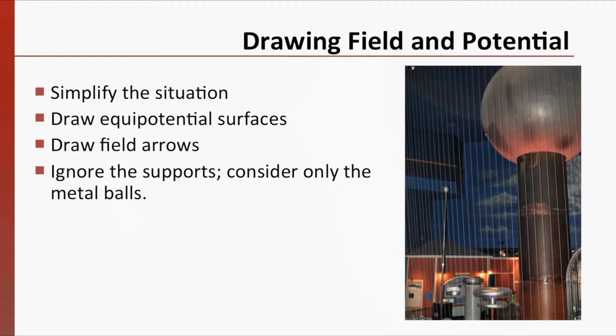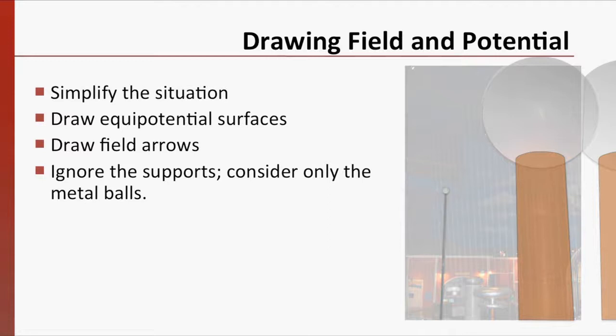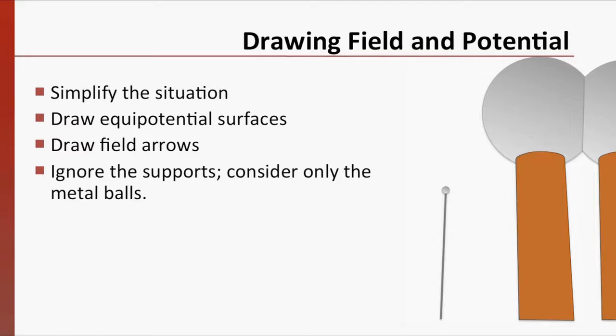Let's take a simplified version of the situation shown. Draw the equipotential surfaces around these two objects, and then draw in the electric field arrows as well. You can ignore the presence of the support pillars. Here are two hints. First, the small metal ball is grounded, or earthed, with an electrical potential of zero.